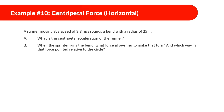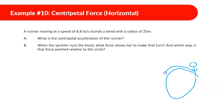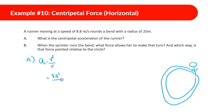A runner moving at a speed of 8.8 meters per second rounds a bend with a radius of 25 meters. What is the centripetal acceleration of the runner? We know centripetal acceleration equals v² over r, so we plug in: 8.8 squared divided by 25. Putting this into the calculator gives us 3.1 meters per second squared.